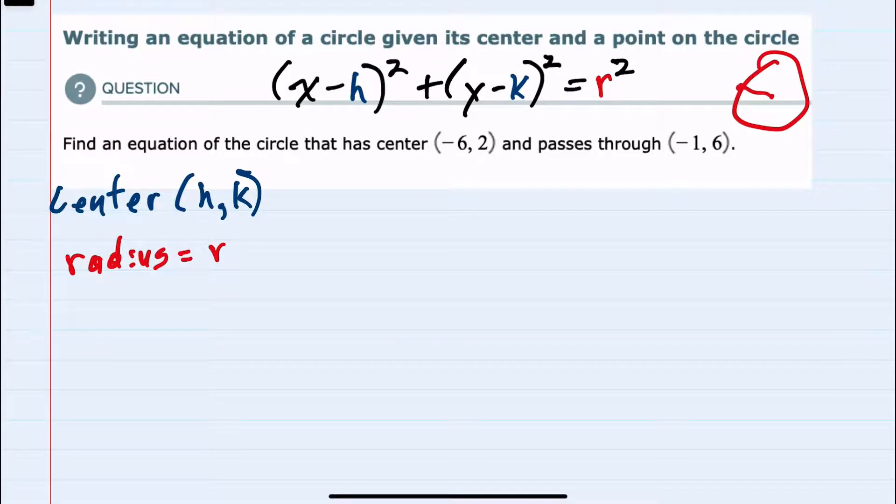And the formula for the distance between two points is the square root of (x₂ - x₁)² + (y₂ - y₁)².